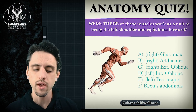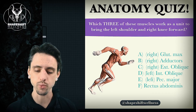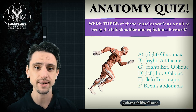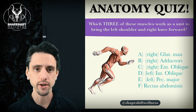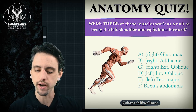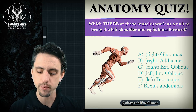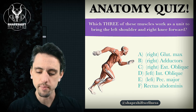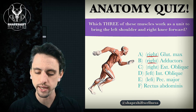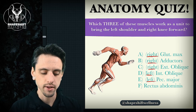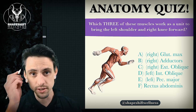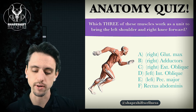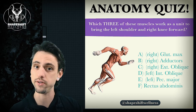So which three of these muscles work as a unit to bring the left shoulder and right knee forward? Pause the video if you still need some time to think. We've got to pick three of the following options. Notice that we have right, right, right, left, left — so make sure you're paying attention to the side, because some of these muscles would be correct answers if they were on the other side. That's why they're there to distract you.